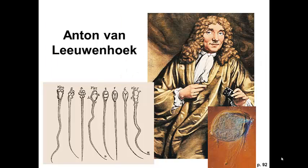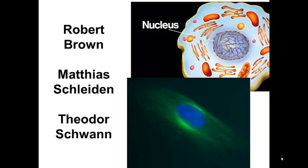Next, Anton van Leeuwenhoek used his microscope to describe many moving cells, such as protists, the sperm cells you see here, as well as bacteria.